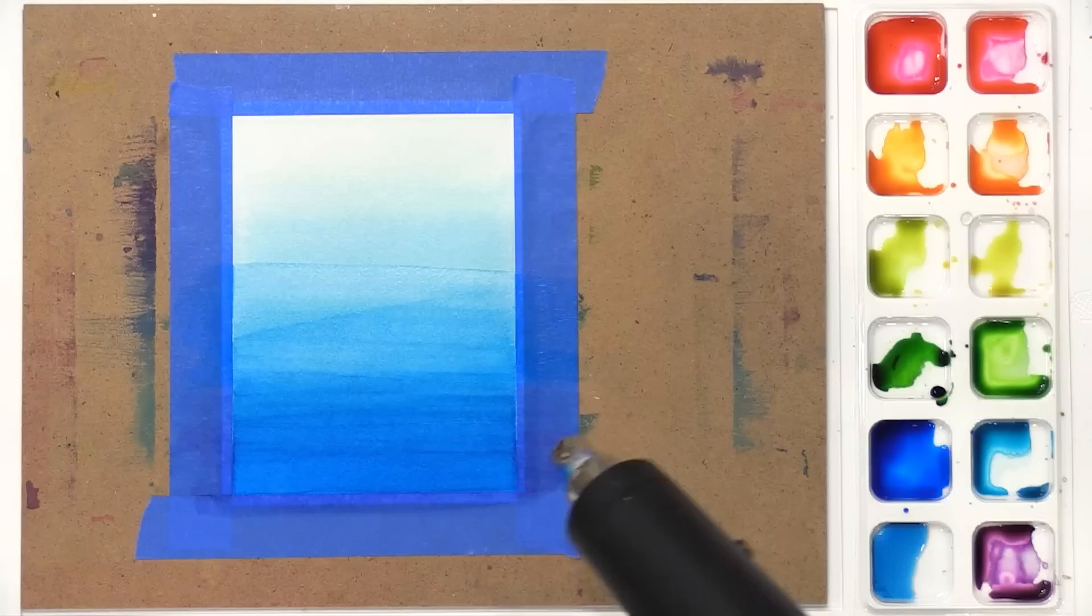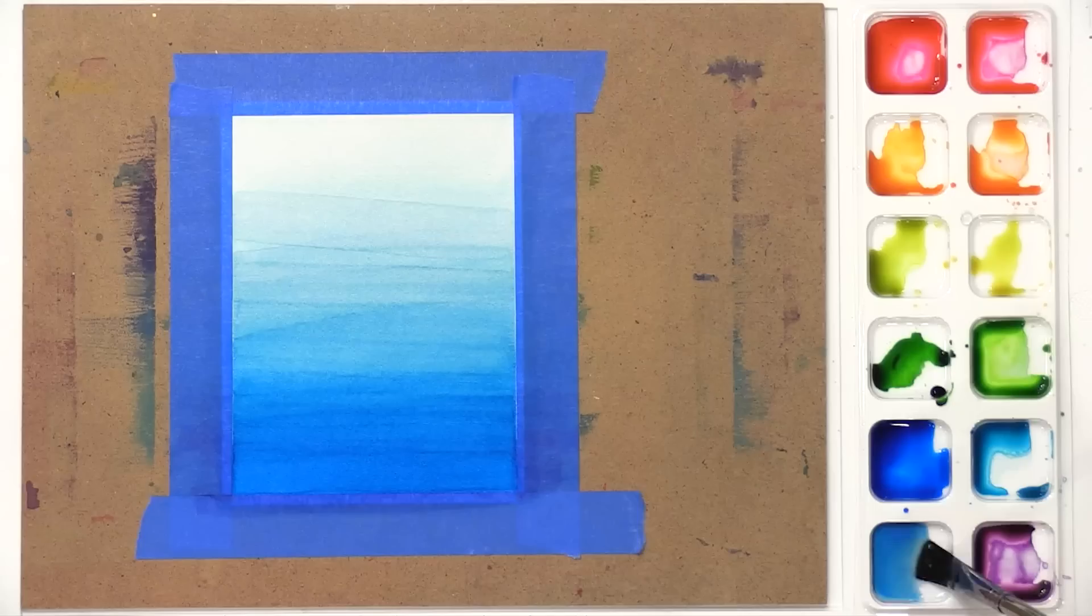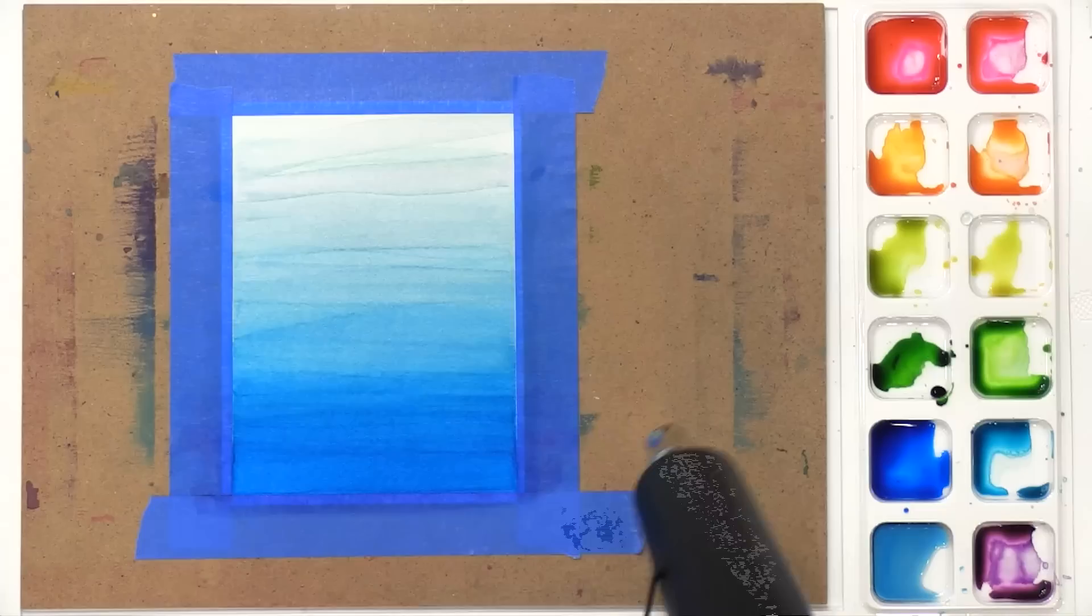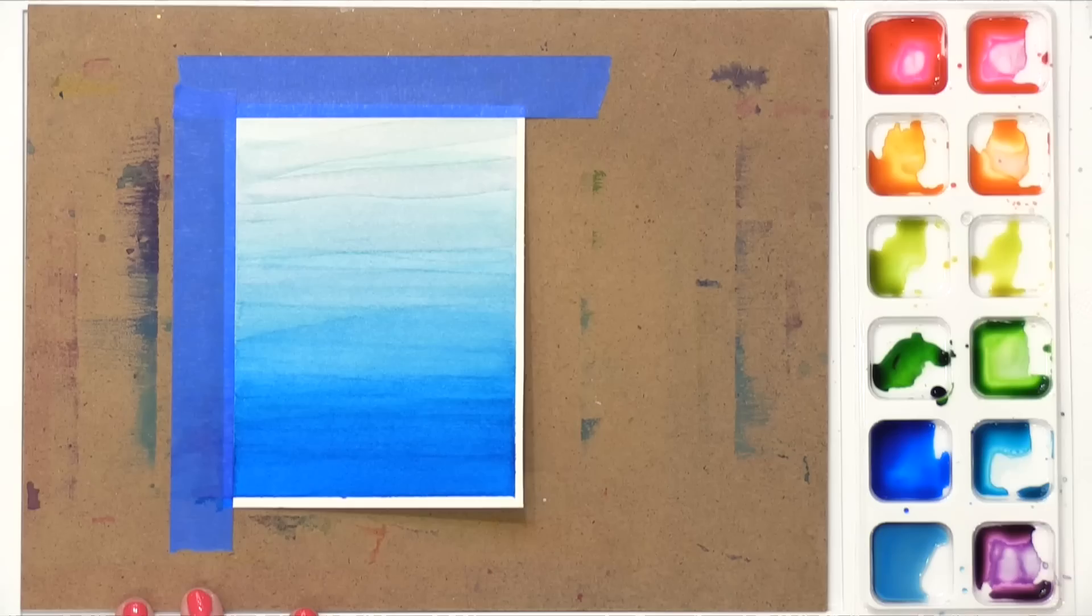This does have a similar look to what I've shown you guys in the past, which I've called a faux dip watercolor. It has a similar look, but in this case, I took it all the way to the top. It sort of looks like waves to me. I think it looks really cool. I'm gonna peel up all of that tape, and I have my background piece completely done.